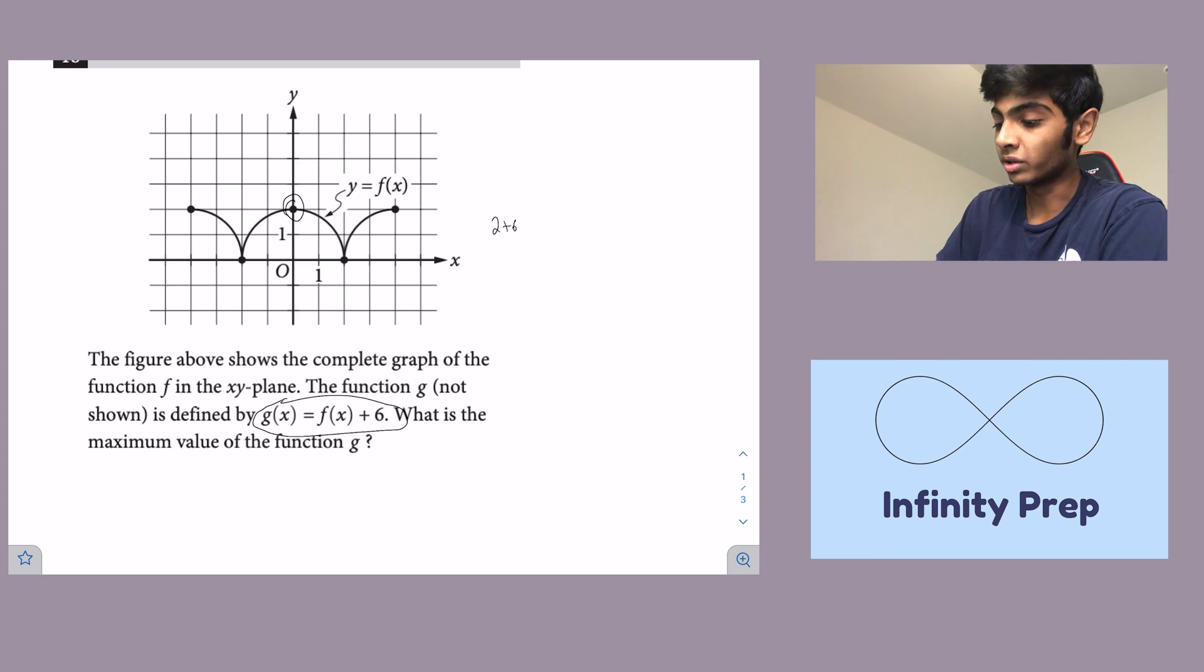So if we move it up 6, really it's just 2 plus 6 and we're left with 8. So the maximum value of function g is going to be 8. That's our final answer.